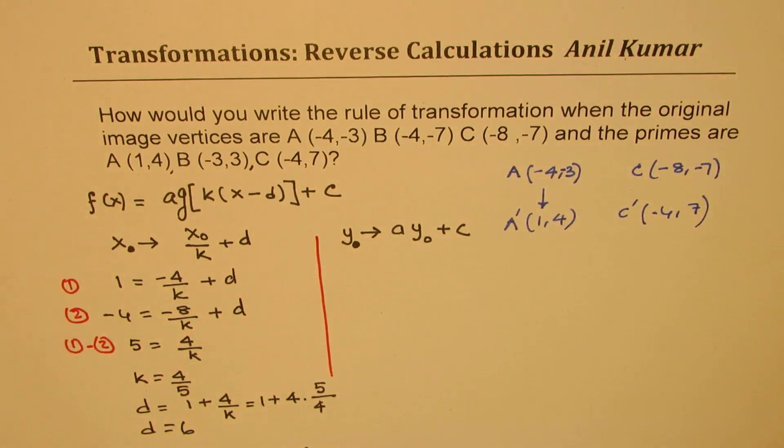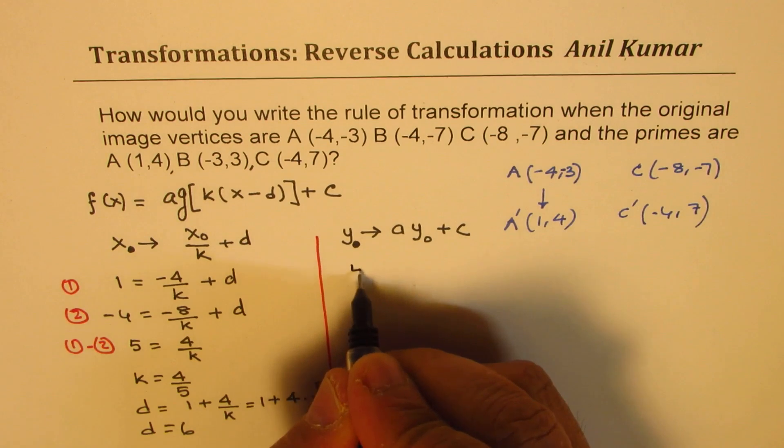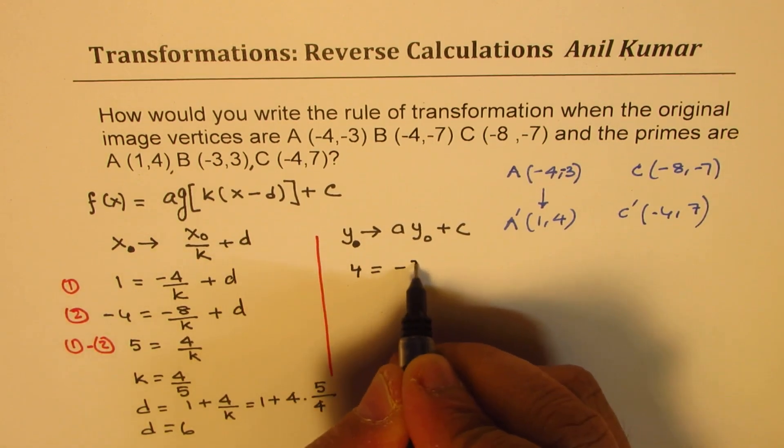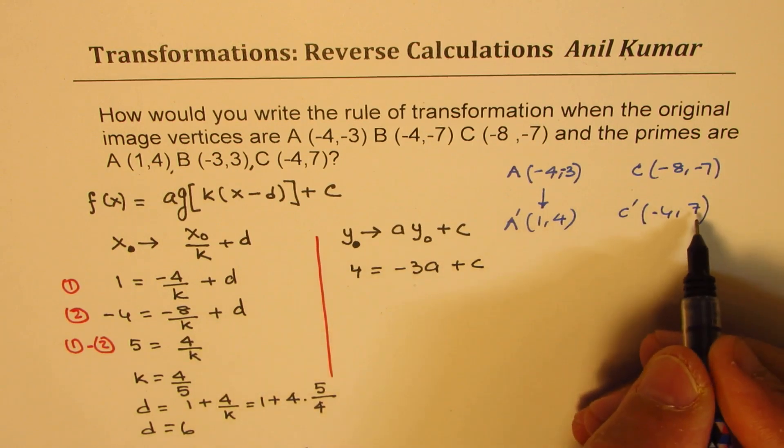Now let's do the vertical. So 4 comes from -3, so here 4 = -3a + c. And here 7 comes from -7, so 7 = -7a + c.